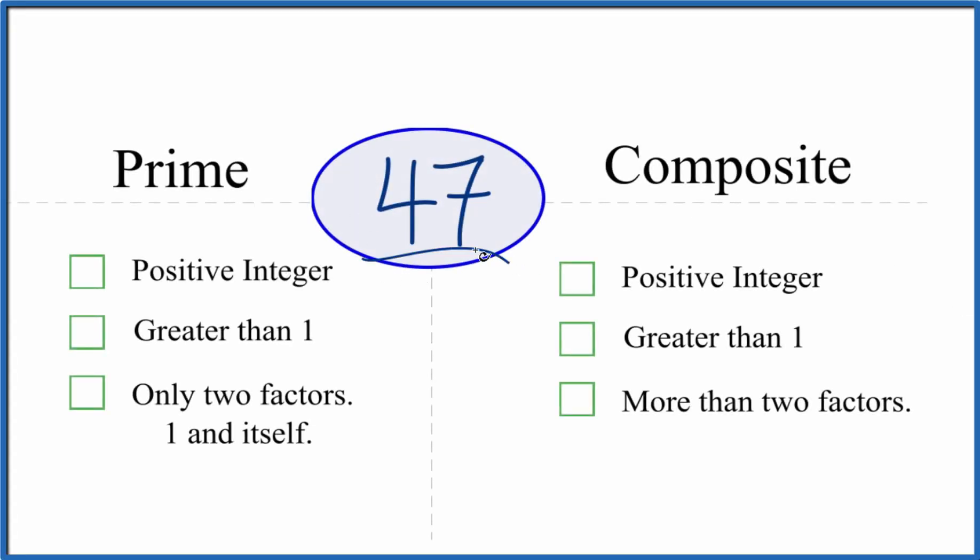Let's figure out whether 47 is a prime number or a composite number. And here's how you do it. We'll start with figuring out whether it's prime.